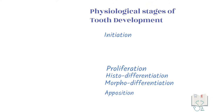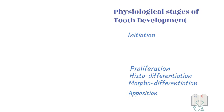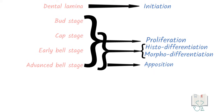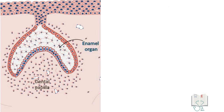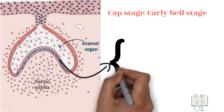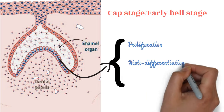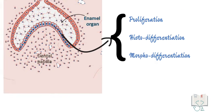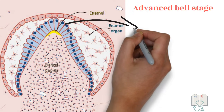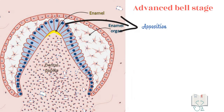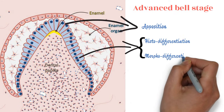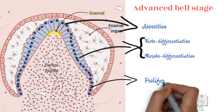So that was about the physiological stages of tooth development, where except for initiation, there is a lot of overlap in the physiological processes. For example, as the enamel organ passes through the cap stage and early bell stage, it is carrying out the physiological processes of proliferation, histodifferentiation, and morphodifferentiation simultaneously. In the advanced bell stage, the cells at the cusp tip are fully differentiated and so begin apposition, while the cells cervically show histodifferentiation and morphodifferentiation, and the cells at the cervical loop show proliferation.